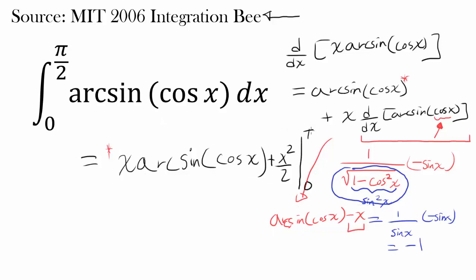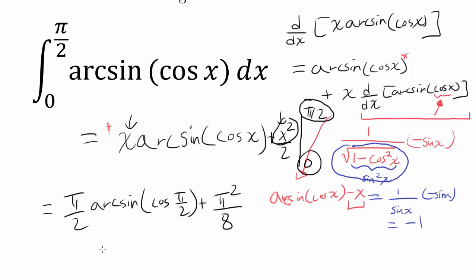We want to go from 0 to π/2. Plugging 0 in, obviously, since you have 0 times something and 0²/2, that's going to disappear into thin air. So all we have to do is plug in π/2. We have π/2 times arcsin(cos(π/2)) plus π/2 squared is π²/4, dividing by 2 gets you π²/8.